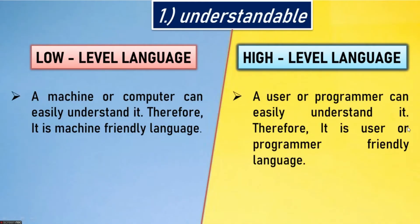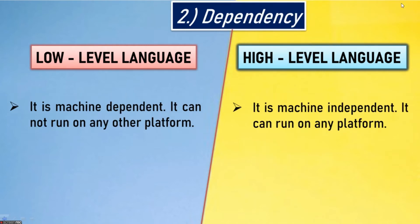First point: understandability. Low level language — a machine or computer can easily understand it, therefore it is a machine-friendly language. High level language — a user or programmer can easily understand it because it is closer to the English language, therefore it is a user or programmer-friendly language.